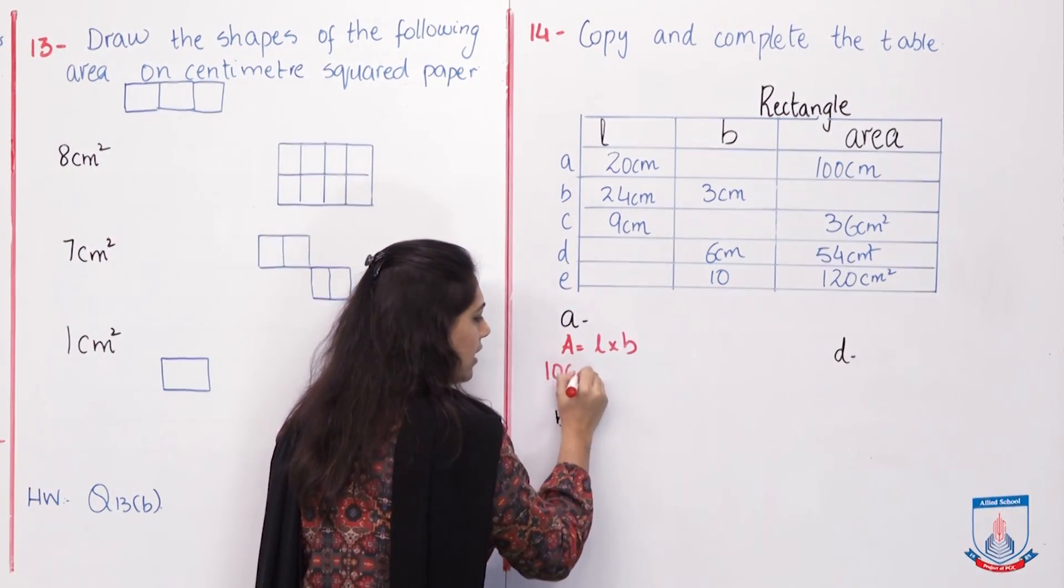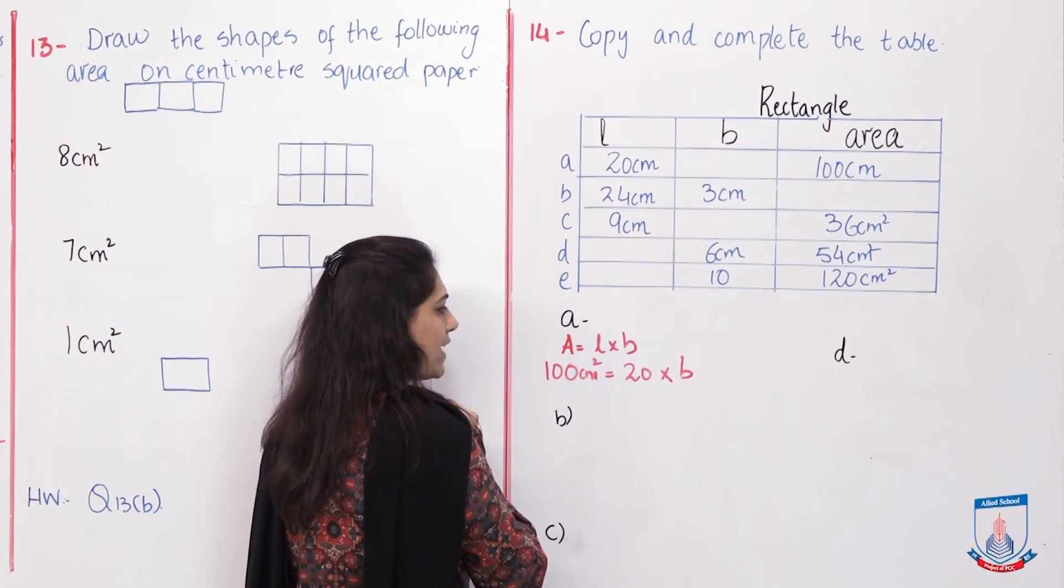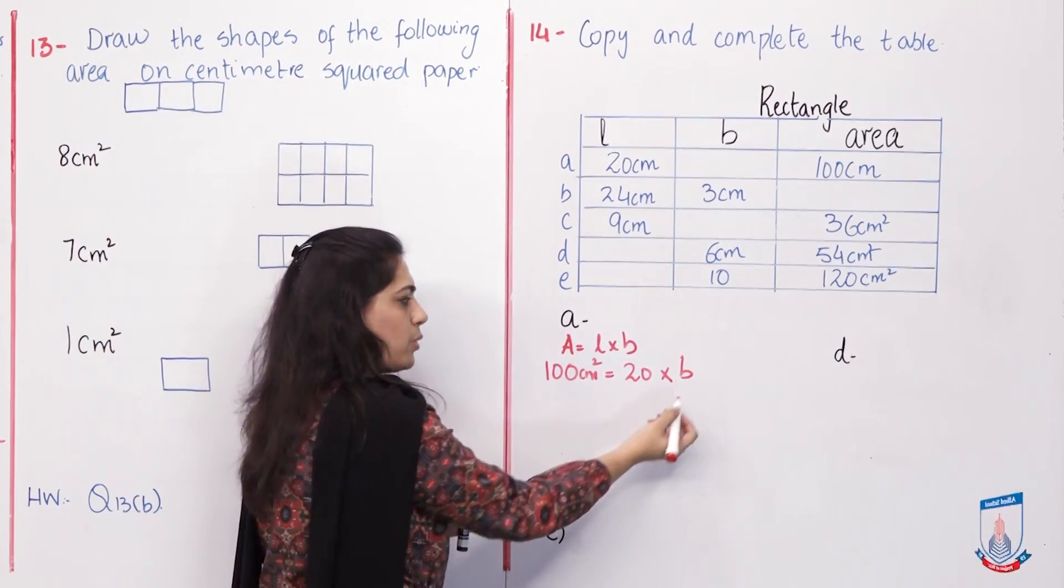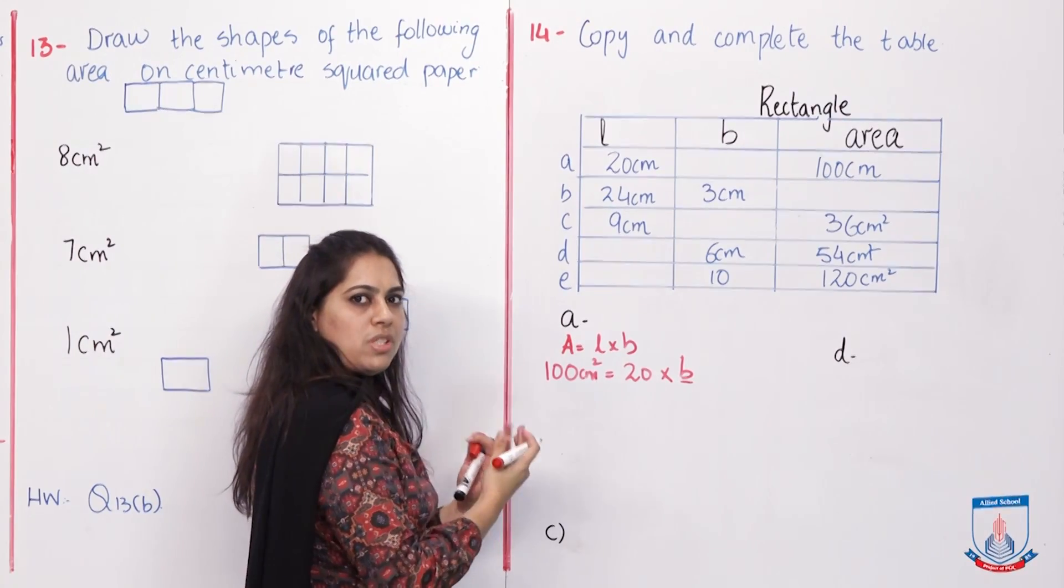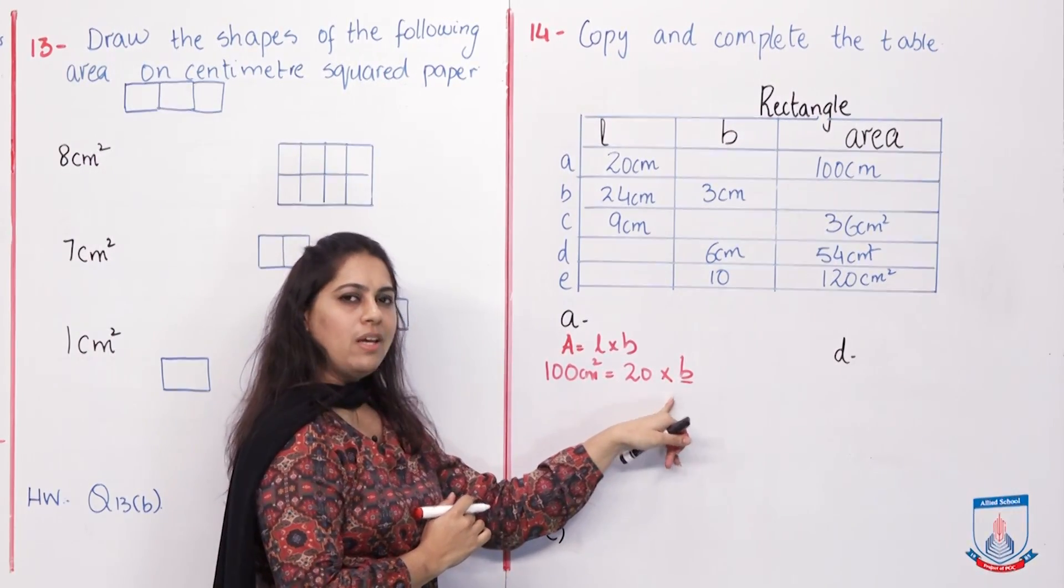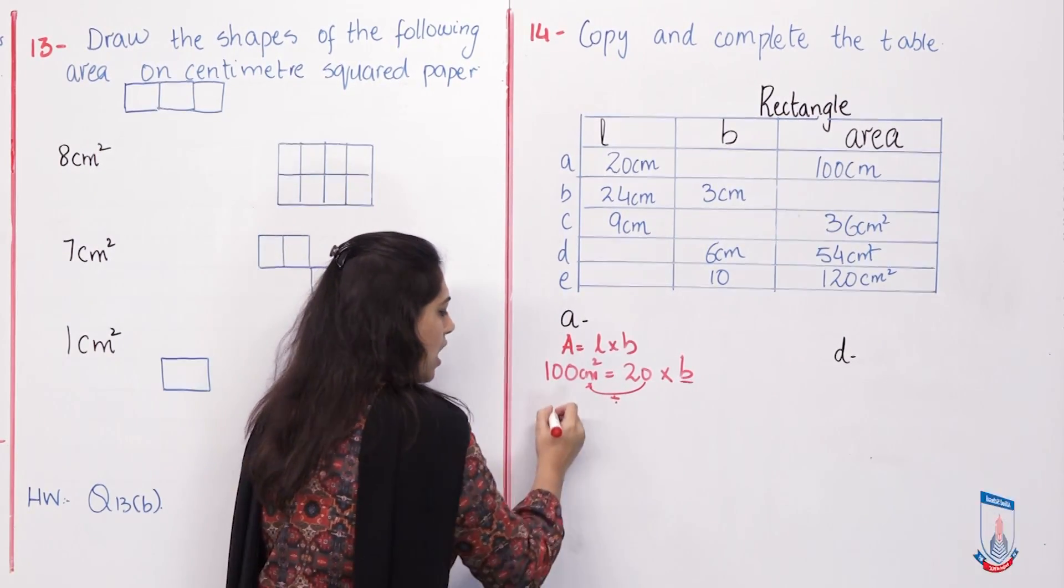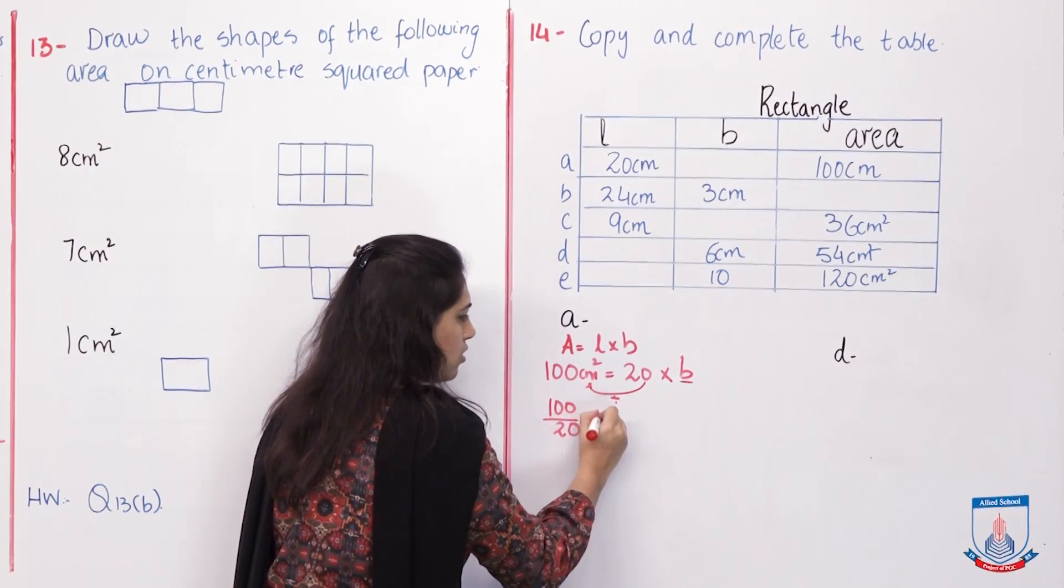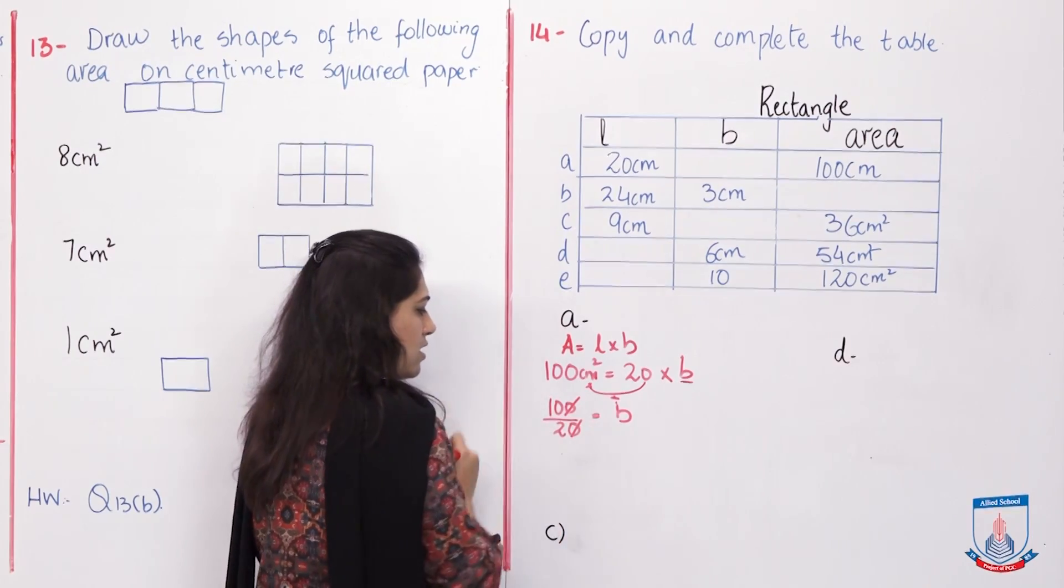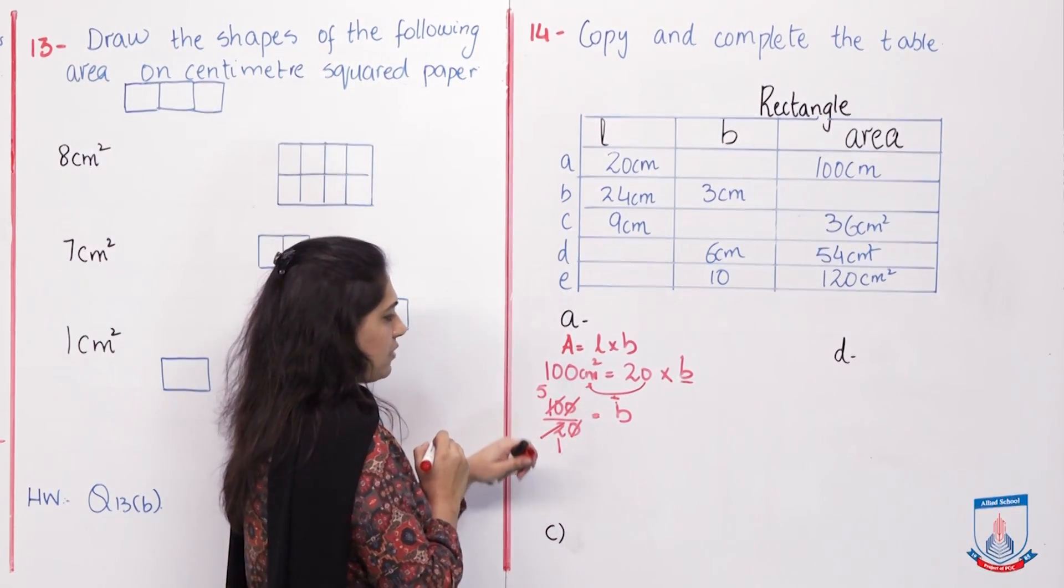We have to find B. We have to keep what we're finding equal to one side and send the rest to the other side. Before sending, we need to see what operation is here. It is multiplication. But as it crosses the equal sign, it will be opposite. It will change its operation to division. Now we have to do 100 divided by 20. Zero with zero cut. Then I am going to count. Read the 2 times table: 2 times 1 is 2, 2 times 5 is 10.